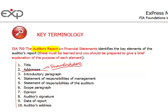Even though the auditor's report is usually a publicly available document — it's sent to the registry, sometimes it's on the company's website — it doesn't matter. In reality it was written to the shareholders, and the auditor's responsibility is to shareholders only. So the addressee of the opinion is always the shareholders.